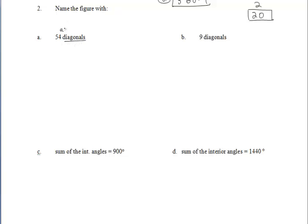For the first one, we're told that this shape has 54 diagonals that can be drawn in it. So let's go ahead and work with the diagonal formula which is n times n minus 3 divided by 2. And since we know the number of diagonals that this shape has, we can set that formula equal to 54.